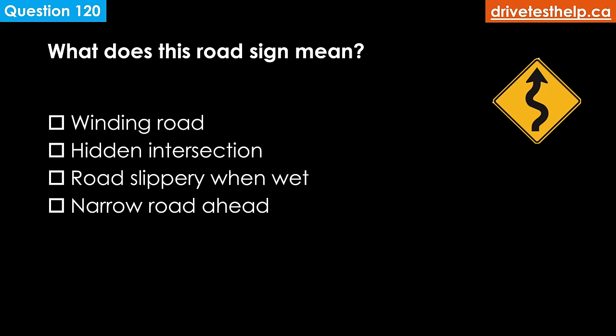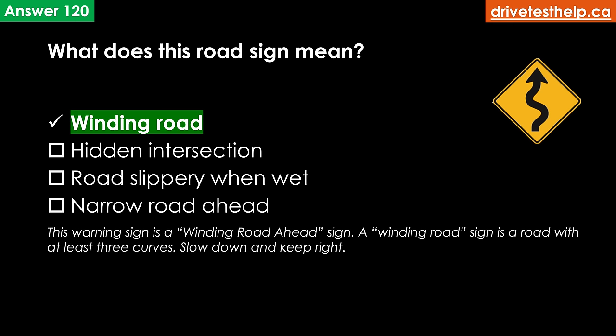What does this road sign mean? Options: winding road; hidden intersection ahead; road slippery when wet; narrow road ahead. The correct answer is winding road. This warning sign is a winding road ahead sign. A winding road is a road with at least three curves — slow down and keep right.